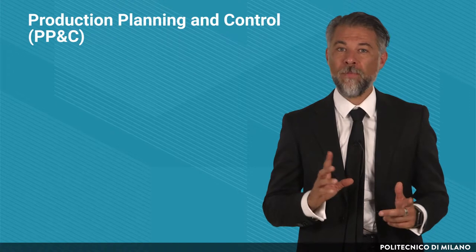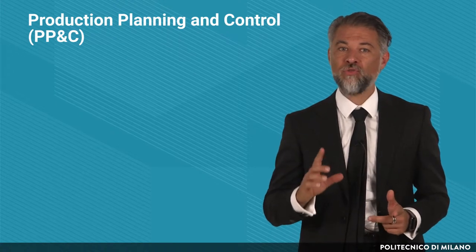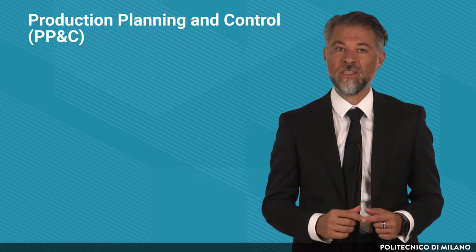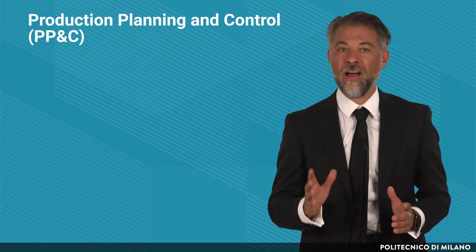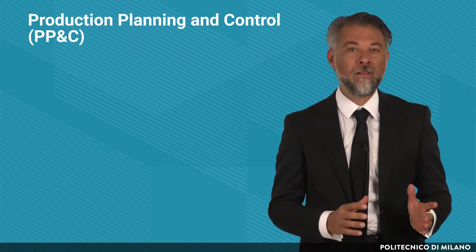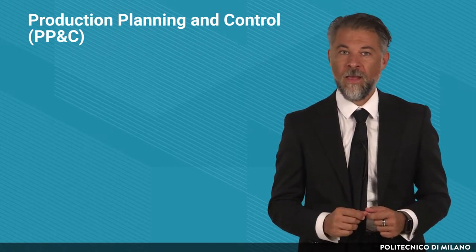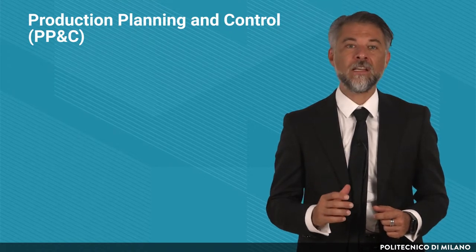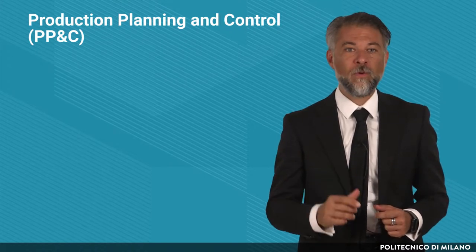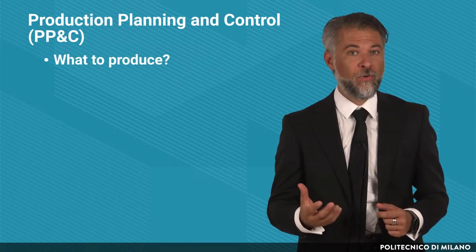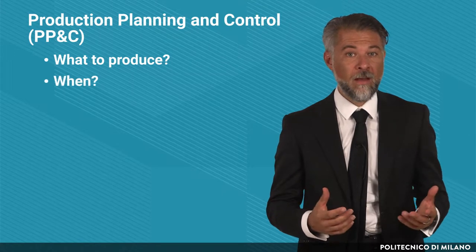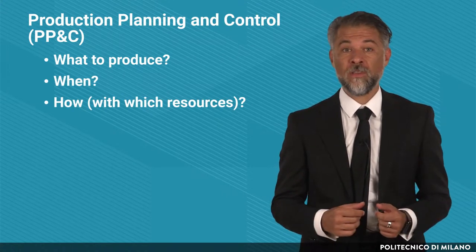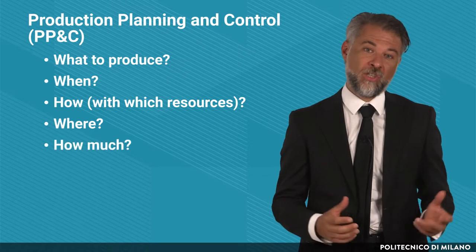The Production Planning and Control process is an inter-functional multi-objective activity in which plans are formulated answering to the following questions: what to produce, when, how, with which resources, where and how much.